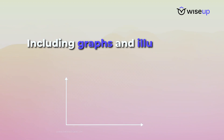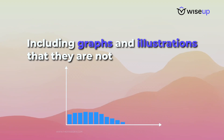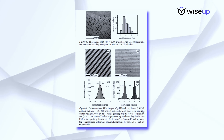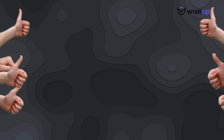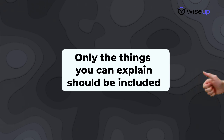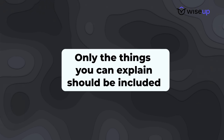Another mistake I've seen people making is including graphs and illustrations that they are not going to explain. For example, if you have a graph with seven to eight different plots and you don't have enough time to explain each plot, the rule of thumb is that you should only include those things in your presentation that you have the time to explain. Anything that you can't explain should be left out.